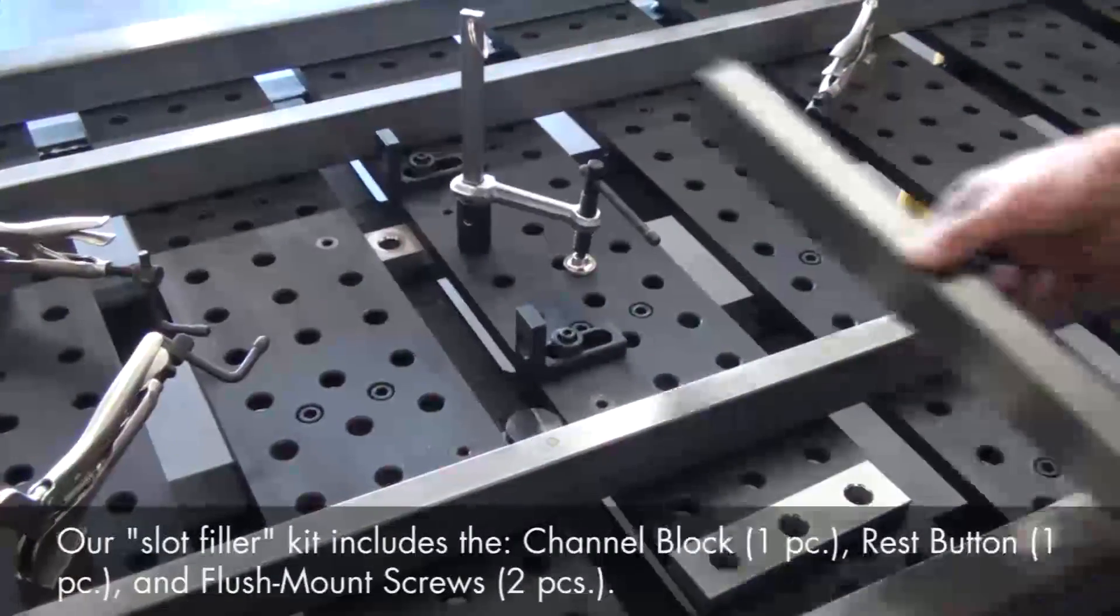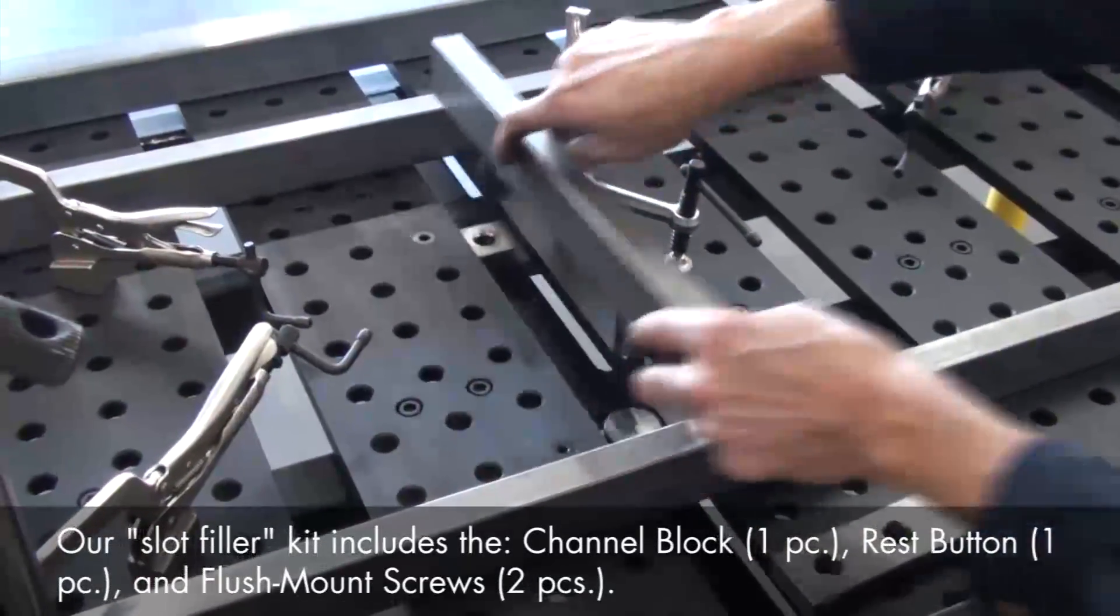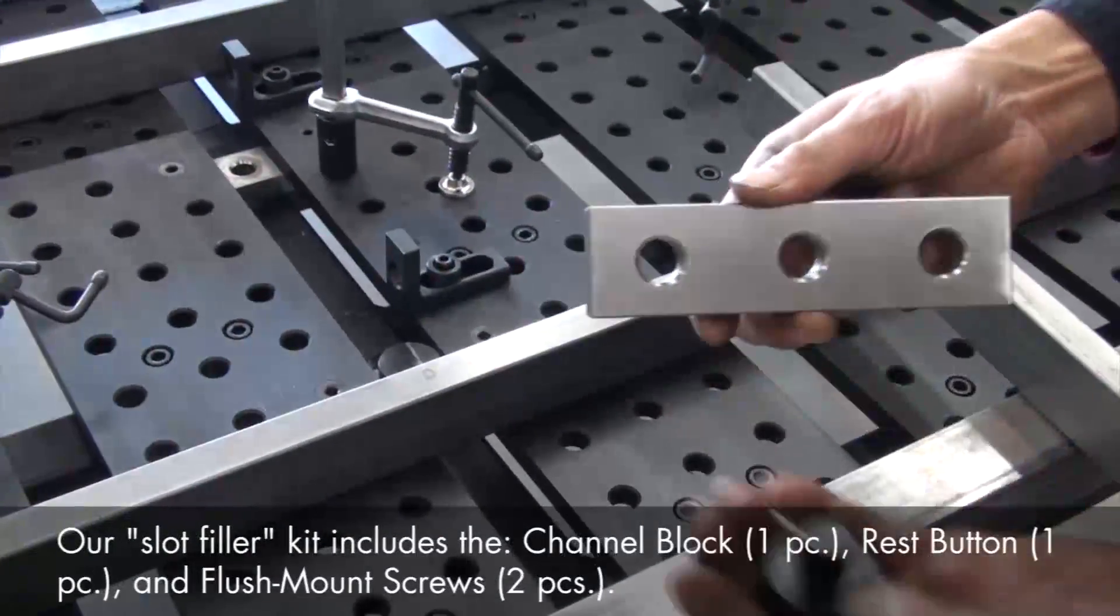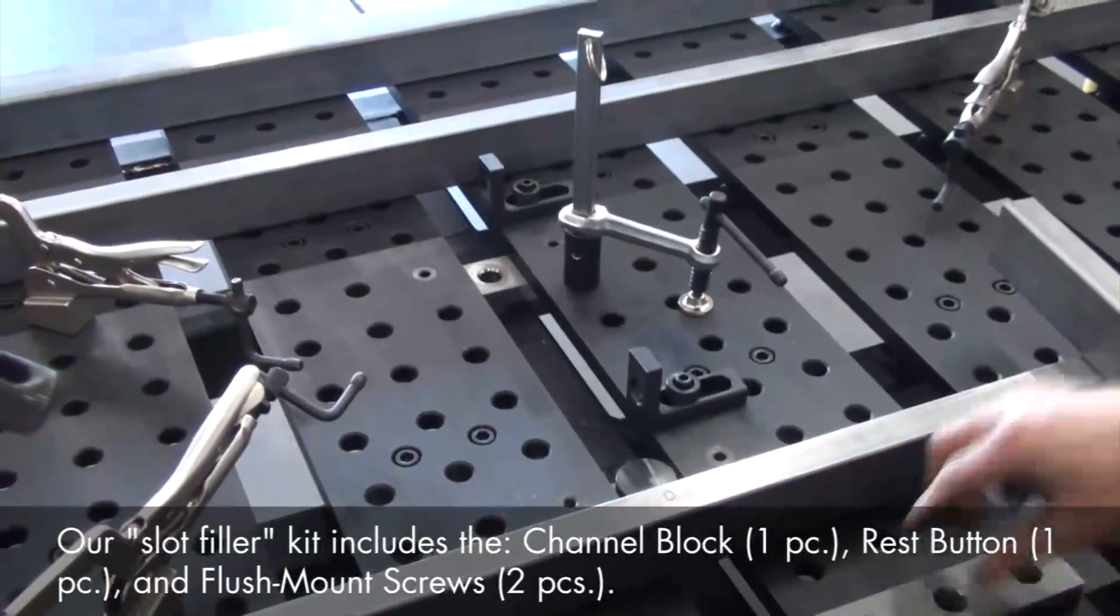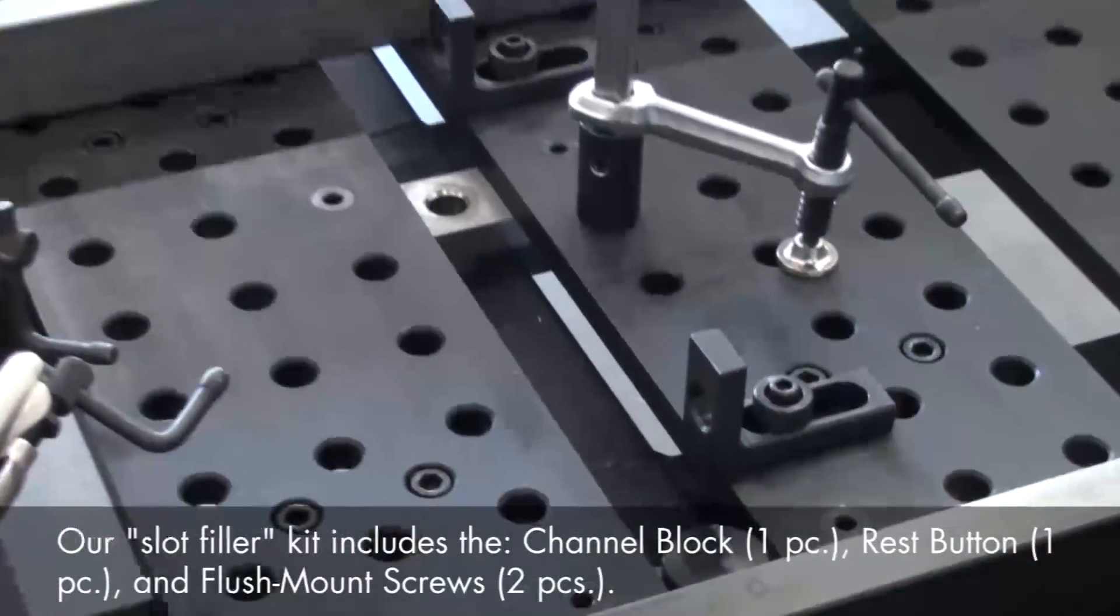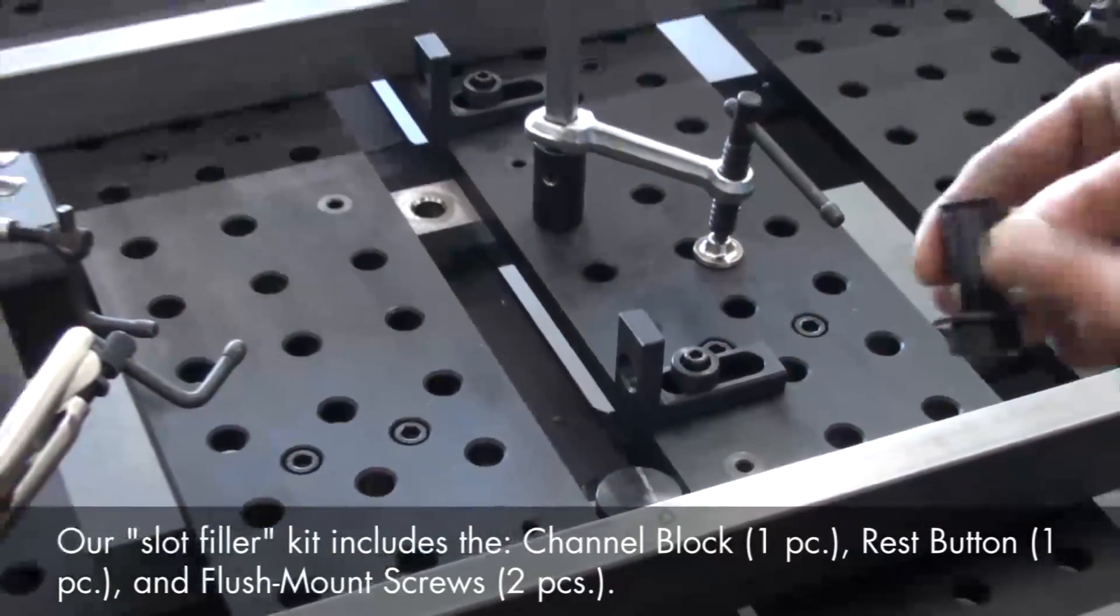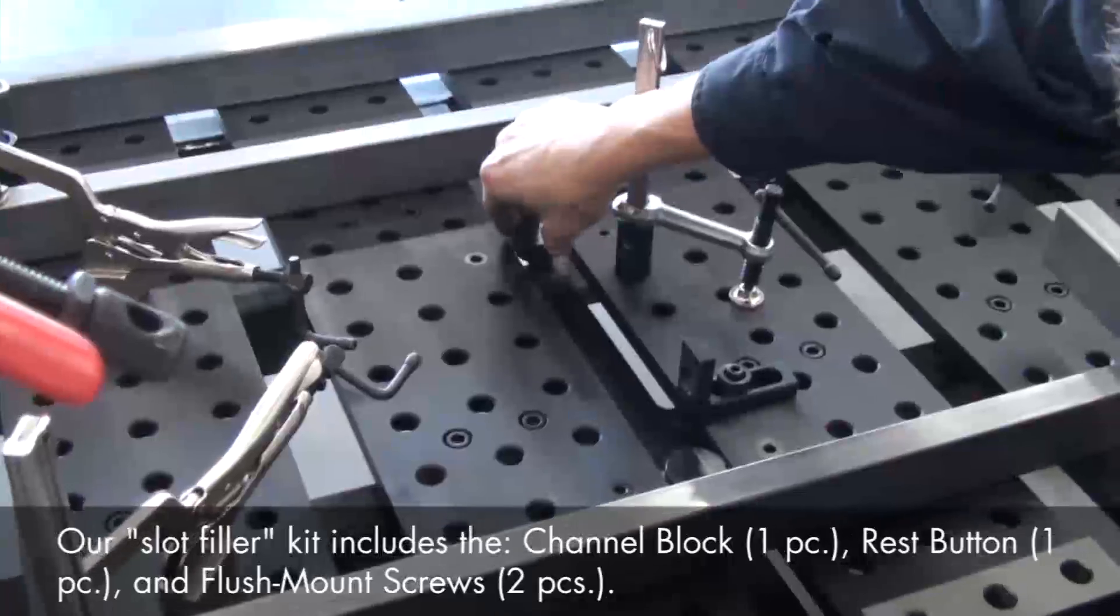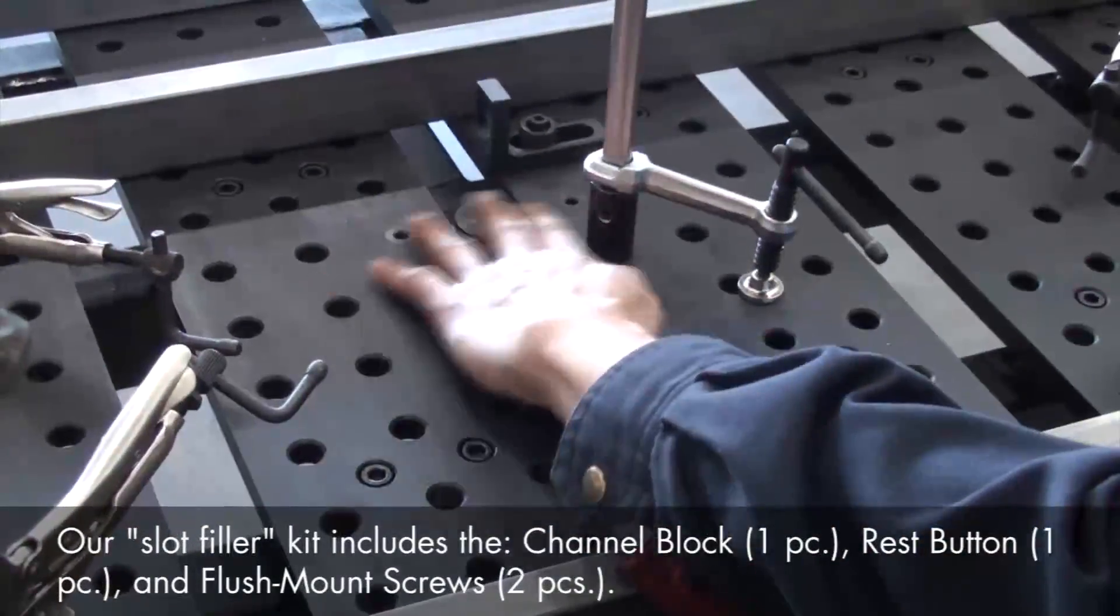One of our support tubes needed to be positioned directly over the 1.7-inch slots in the table, so we used the channel block and rest button from the framing kit. Use the channel block and rest button whenever a flat, continuous support surface is required directly over the table slots. Just place the three-hole channel block beneath the BuildPro plates and mount with the socket head shoulder screws. Then place the rest button in the center hole of the channel block to provide a rigid work surface that's perfectly level with the tabletop.